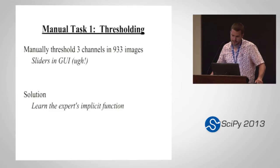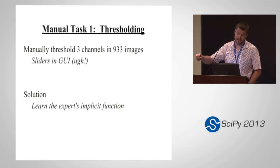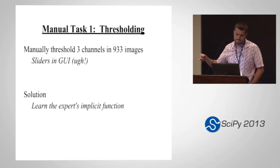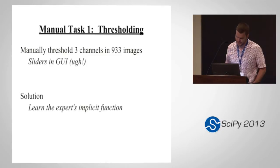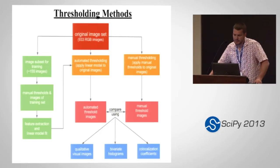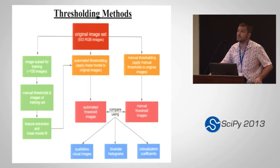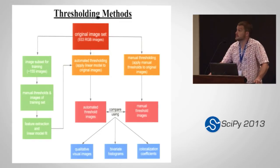Particularly if there aren't graduate students running around. It's possible to do this thresholding in Photoshop or in more domain-specific packages like ImageJ or Metamorph, but doing these individually means taking sliders in a GUI, wiggling them around, and saying 'I like how this looks.' We wanted to see if we could do it a little bit better than that and learn the implicit function that the expert was using to do this thresholding.